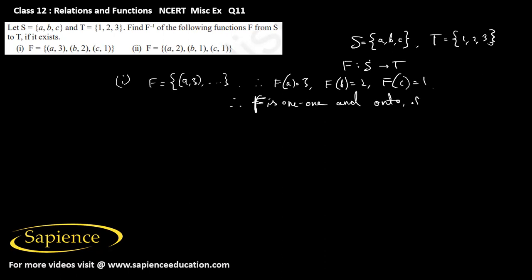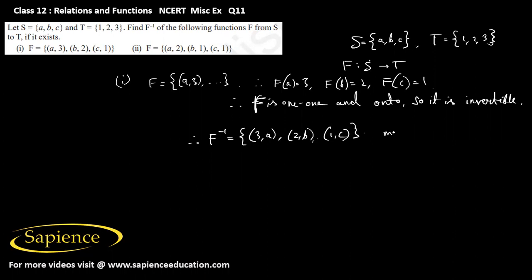Therefore the function f is one-one and onto, so it is invertible. Therefore the function f inverse will contain the elements (3, a), (2, b), and (1, c), which means f inverse of 3 equals a, f inverse of 2 equals b, and f inverse of 1 equals c. This is the f inverse.